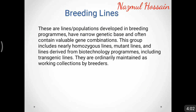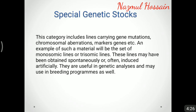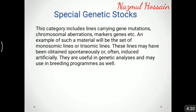Breeding lines are lines developed in breeding programs, have a narrow genetic base, and often contain valuable gene combinations. This group includes nearly homogeneous lines, mutant lines, and lines derived from biotechnology programs including transgenic lines. They are ordinarily maintained as working collections by breeders. Special genetic stocks include lines carrying gene mutations, chromosomal aberrations, marker genes, etc. Examples include sets of monosomic lines or trisomic lines, which may be obtained spontaneously or often induced artificially and are useful in genetic analysis and may also be used in breeding programs.